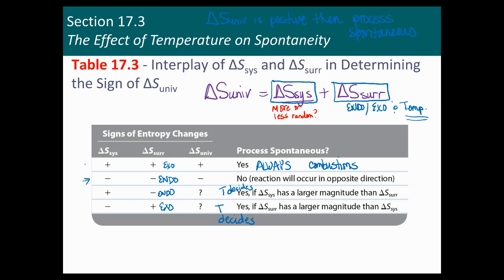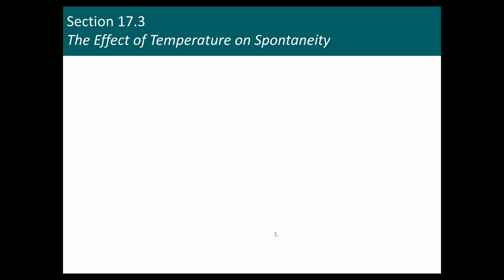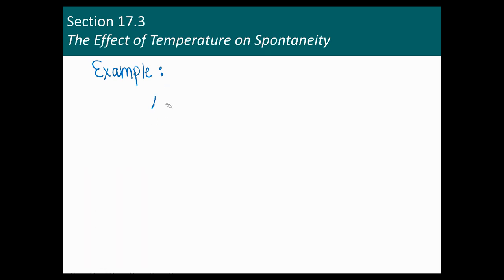Let me give you an example — an ice cube. You take it out of your freezer and you know for a fact it is going to melt. So that is a spontaneous process. When you pull that ice cube out of the freezer, it's going to melt. What I'd like you to do is first ask yourself what is going to happen to the entropy of the system — is it more or less organized? And then think about whether it's endo or exothermic.